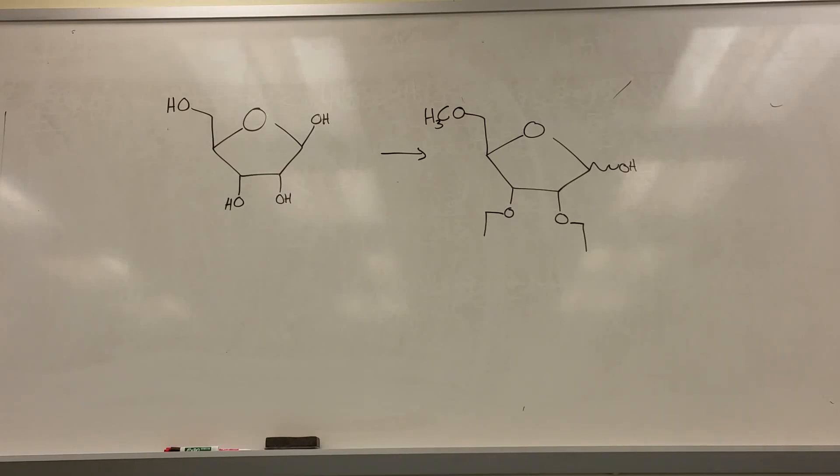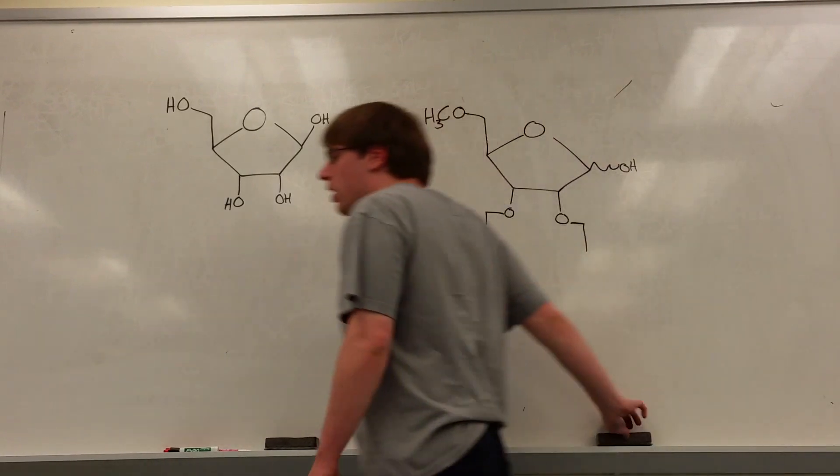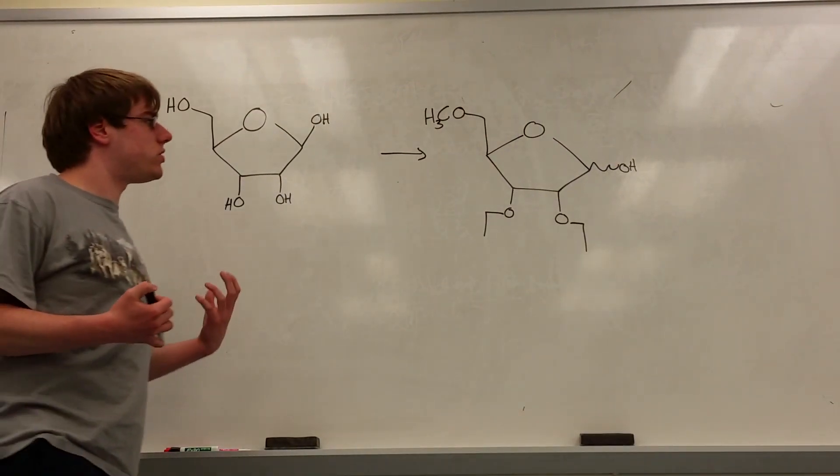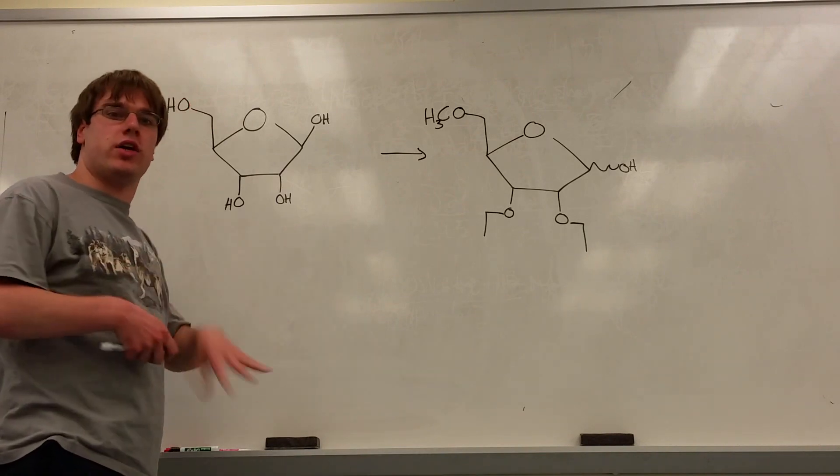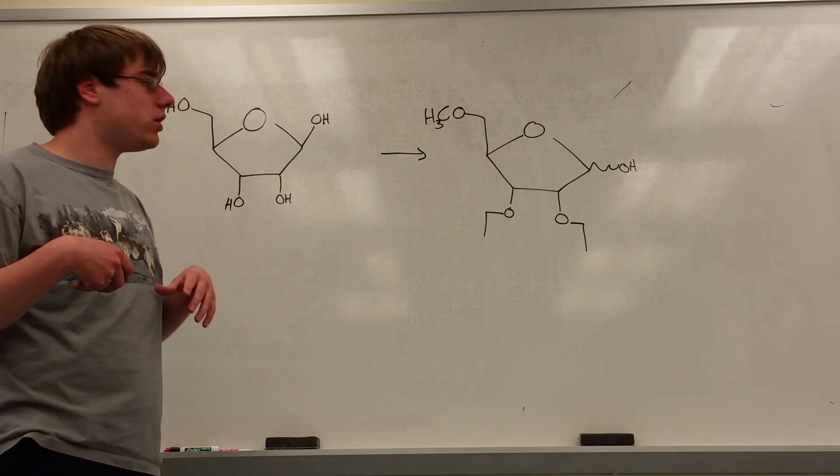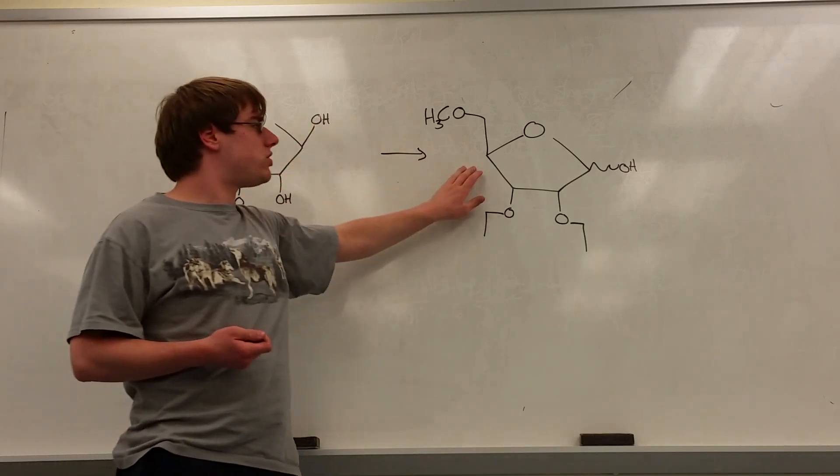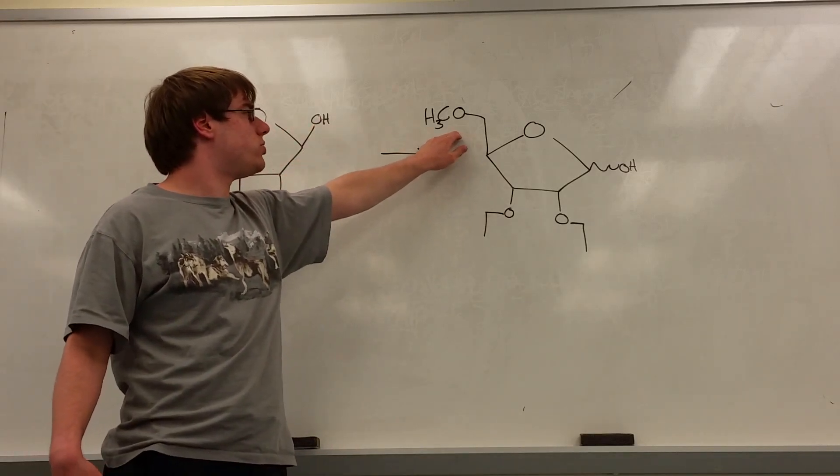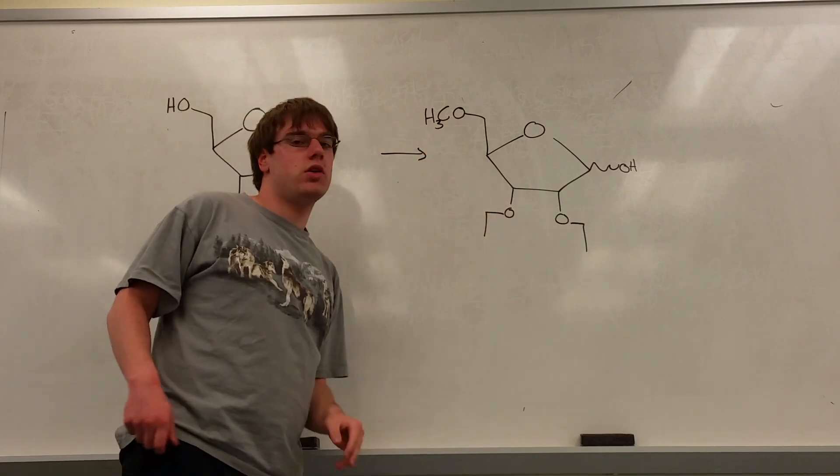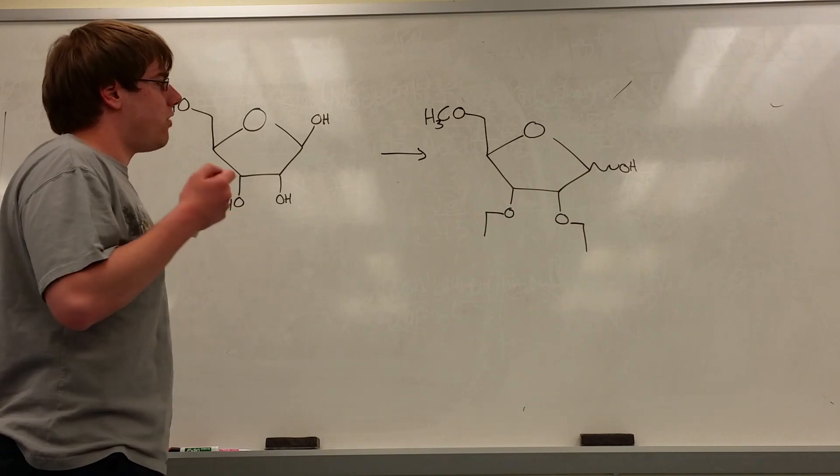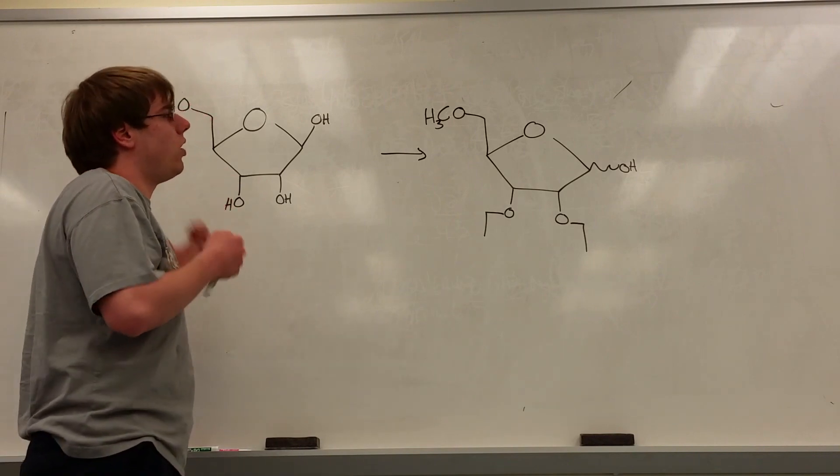So this was a synthesis problem from the 2015 exam 3, and it's very fair game to what you could expect on your exam because it basically just brings all those reactions I talked about in the last video together. Our goal is to turn this sugar into this ring covered in OCH3 and O-ethyl groups. So the first thing to do is approach this from the perspective of what kind of reactions do I need to use, and what changed?